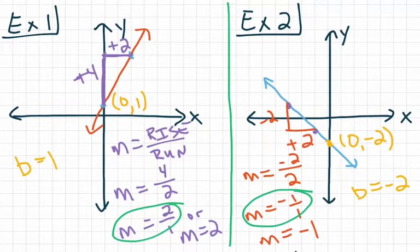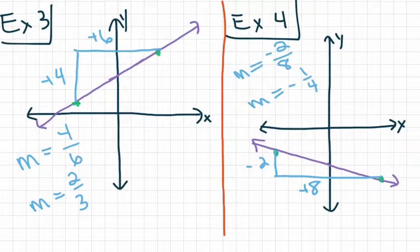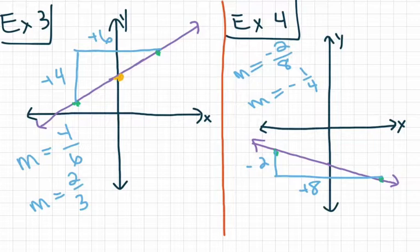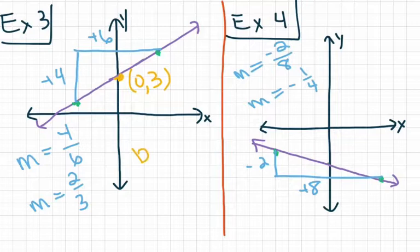Looking at example three, here's our y-axis and the purple line. We're looking for the point where the line and the y-axis intersect. For that point, I don't go left or right at all, so my x-value is zero — but then I go up three — so my value for b is going to be 3.